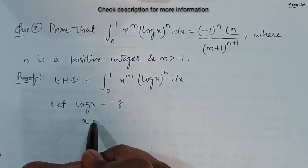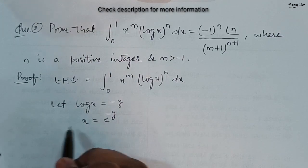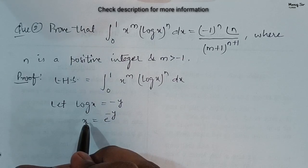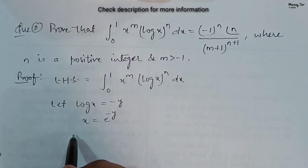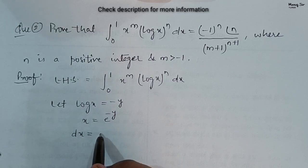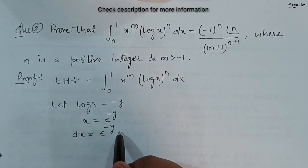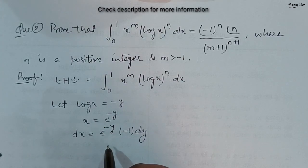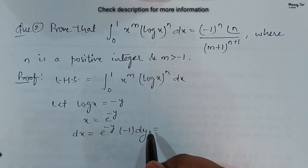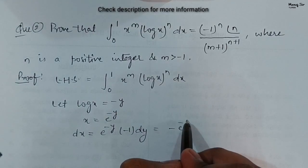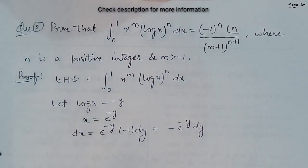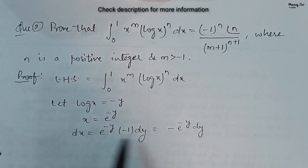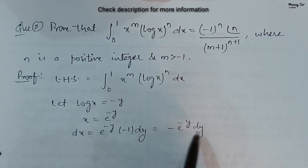From the substitution log x = −y, x becomes e to the power minus y. Differentiating both sides, you get dx equals e to the power minus y times minus 1 dy, so dx equals minus e to the power minus y dy.